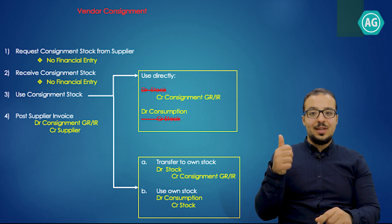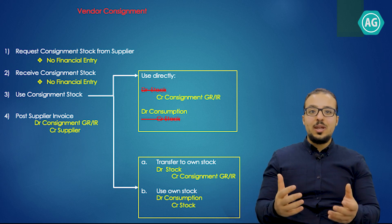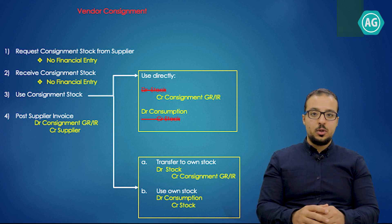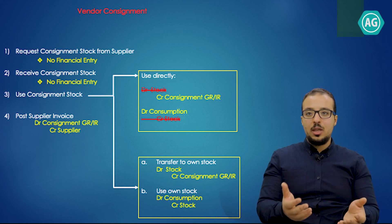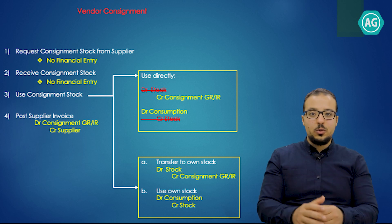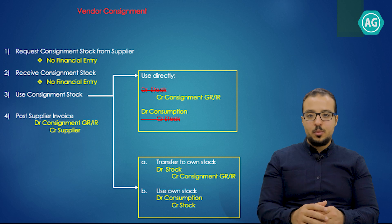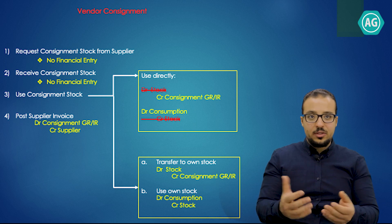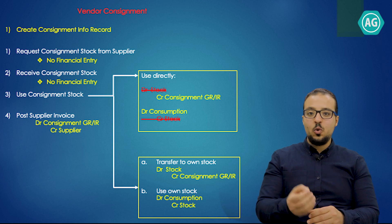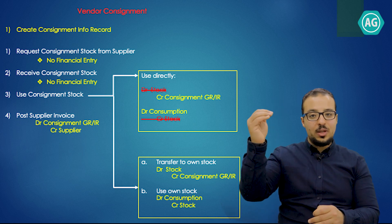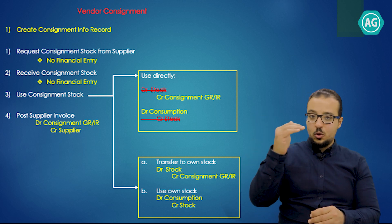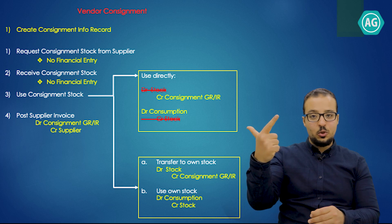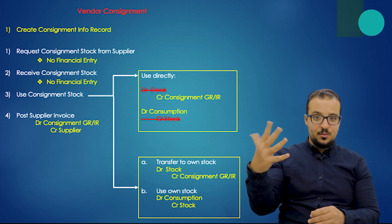There is one more step specific to consignment: when we create the purchase order we do not include any price or conditions, since we are not actually buying the products — only moving them to our storage location. So where does SAP get the agreed price when we post the supplier invoice? The price comes from an information record — an info record. The info record is actually step number one, done before creating the purchase order. The full steps are: info record, purchase order, goods receipt, goods issue, invoice.